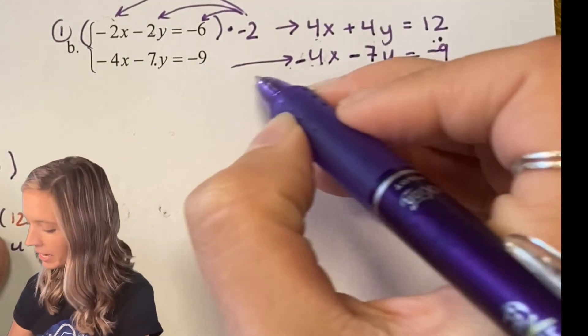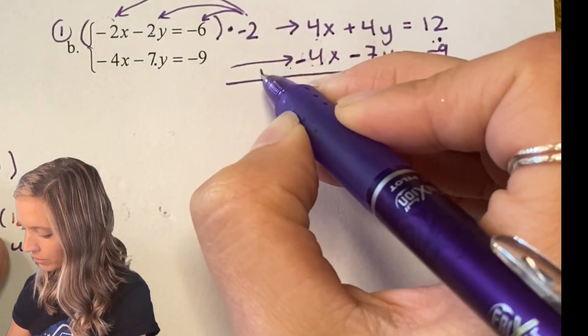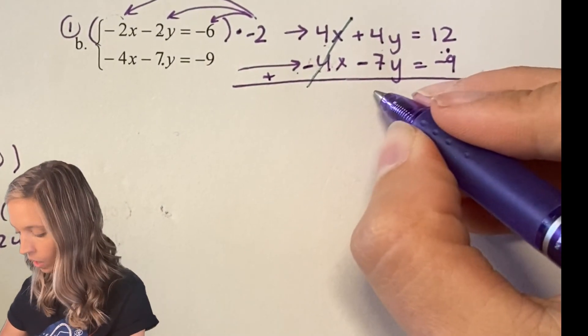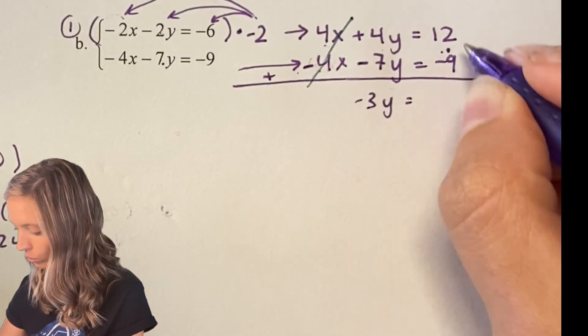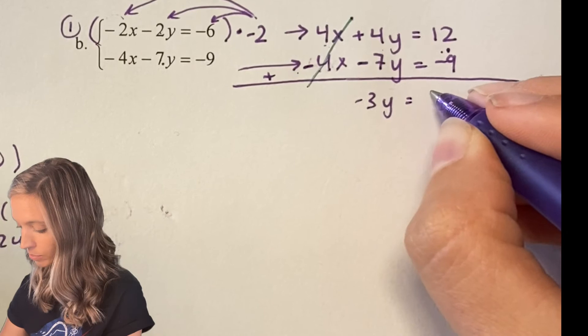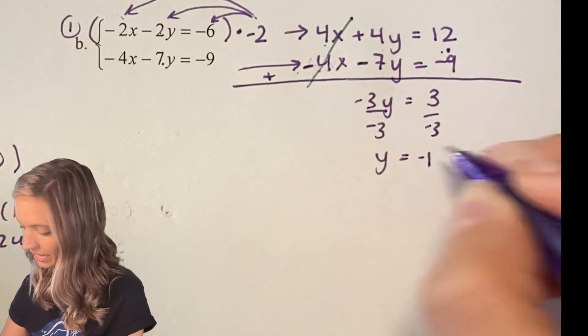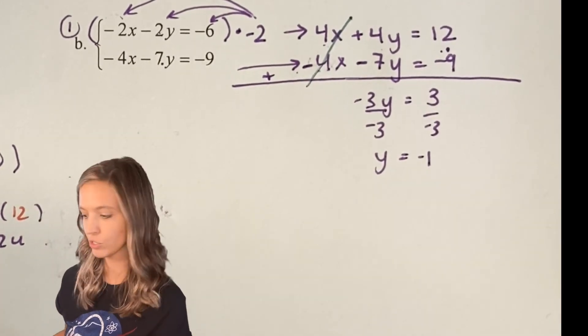Okay now it's time to eliminate so I'm going to add straight down. 4x + -4x, those add out. 4y + -7y is -3y = 12 + -9 is positive 3. So then I can divide by my -3 and I get y = -1 as one of my solutions.